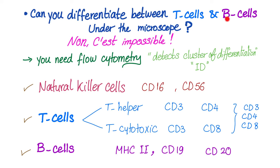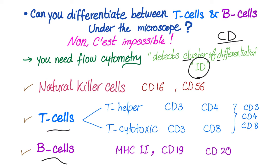Can you differentiate between T-lymphocytes and B-lymphocytes in the peripheral smear under the microscope? It's impossible. That's why we need flow cytometry. Flow cytometry detects cluster of differentiation — C-D. How does the police know if you are John, Sarah, Raj, Ahmed, or anybody else? By showing your ID. How do we know that a cell is a T-lymphocyte, B-lymphocyte, or natural killer cell? By showing their CD — their cluster of differentiation.